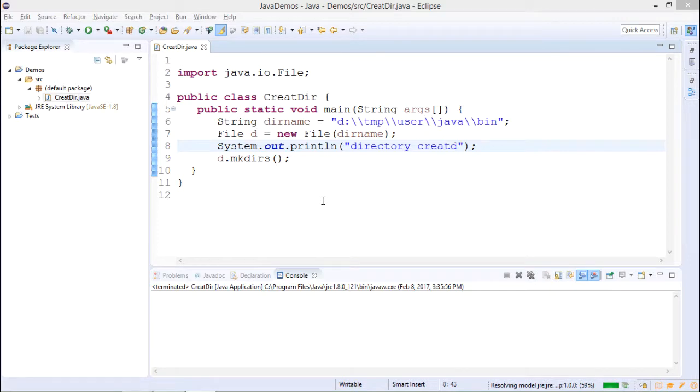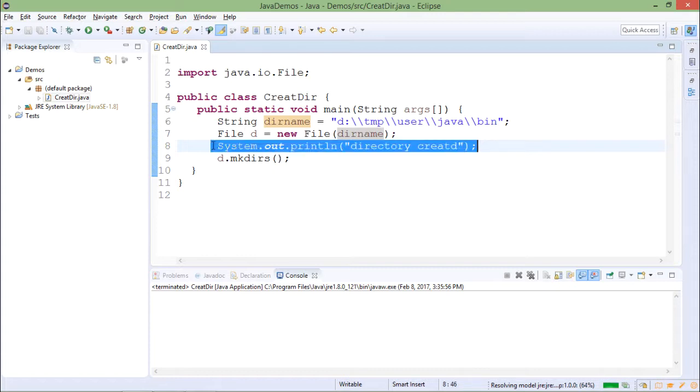This program is for simply creating one directory. I am storing one path in one string dirname. After that I am creating the file object by passing dirname as an argument. And to create directory, I am writing d.mkdir method, so this is a method which will create directory. After I have created the directory, I will print the message: directory is created.